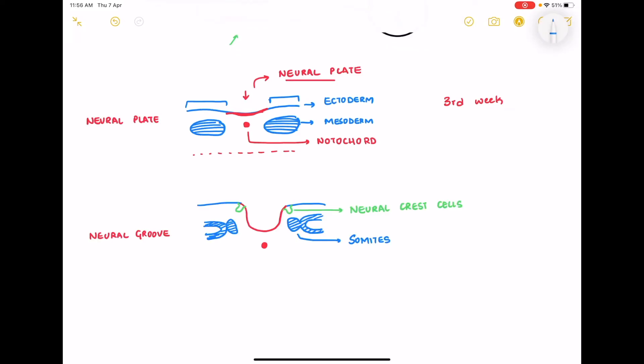This entire neural tube formation starts from third week of gestation, third week after fertilization. And the next thing is that this neural plate deepens to become the neural groove.